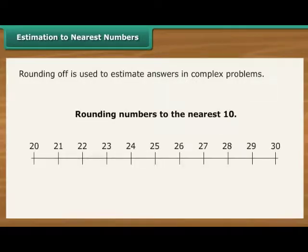Rounding numbers to the nearest ten means finding which ten they are nearest to. For example, 23 rounded to the nearest ten is 20.